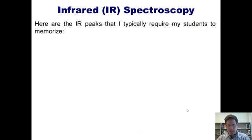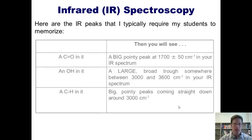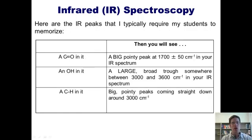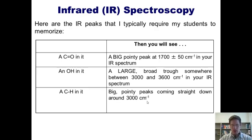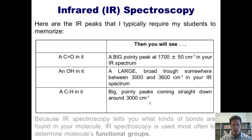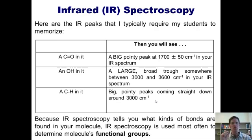Here are the IR peaks I typically require my second-year organic chemistry students to memorize. First, if your compound has a carbon-oxygen double bond — a carbonyl — you will see a big, pointy peak around 1700 plus or minus 50 in your IR spectrum. If your compound has an OH, you'll see a large, broad trough somewhere between 3000 and 3600. And if your compound has a CH, which all organic compounds will, you'll see big, pointy peaks around 3000. IR spectroscopy is most often used to determine a molecule's functional groups — remember that, because it's frequently placed in standardized exam questions.